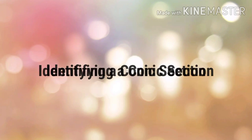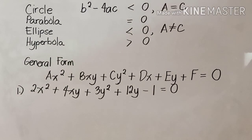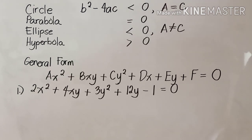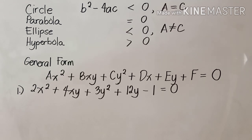Let us now proceed to identifying a conic section. Since there are several conic sections, how do we identify one from another? We will use the determinant, b squared minus 4ac. If the answer is less than zero and a equals c, then it is a circle. If the determinant equals zero, then it is a parabola. If the answer is less than zero but a is not equal to c, then it is an ellipse. If the determinant is greater than zero, then it is a hyperbola. The general form is ax squared plus bxy plus cy squared plus dx plus ey plus f equals zero.